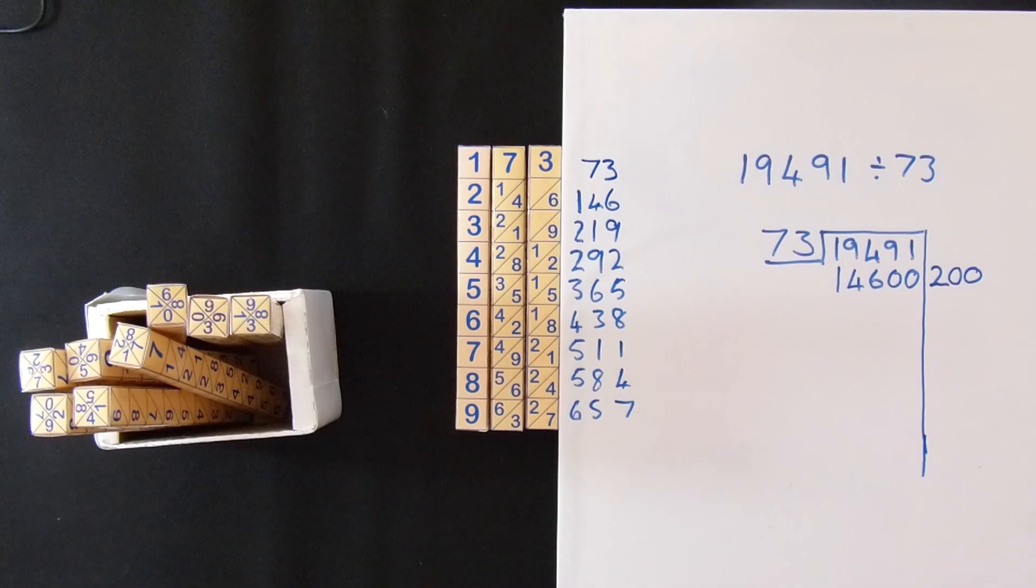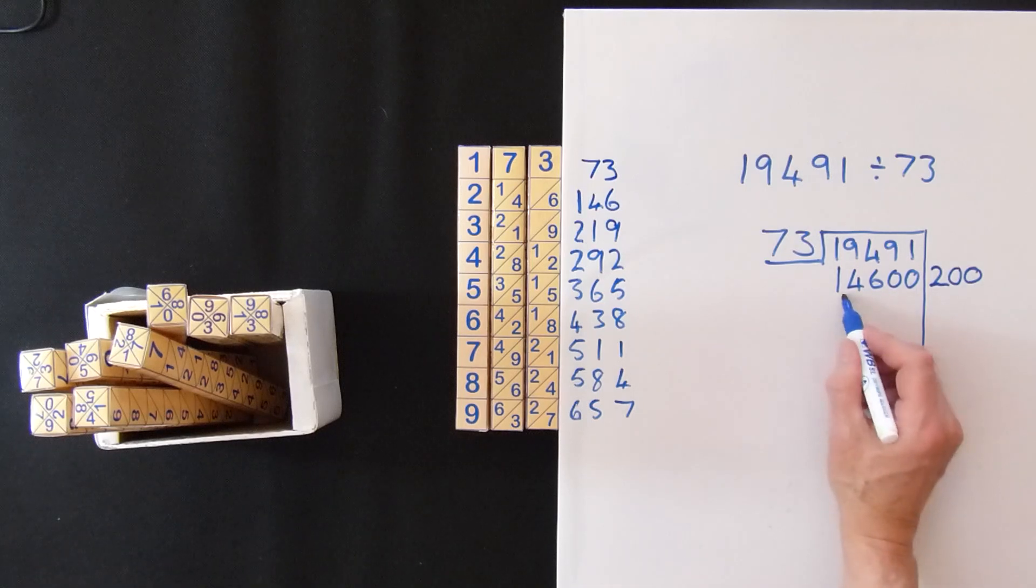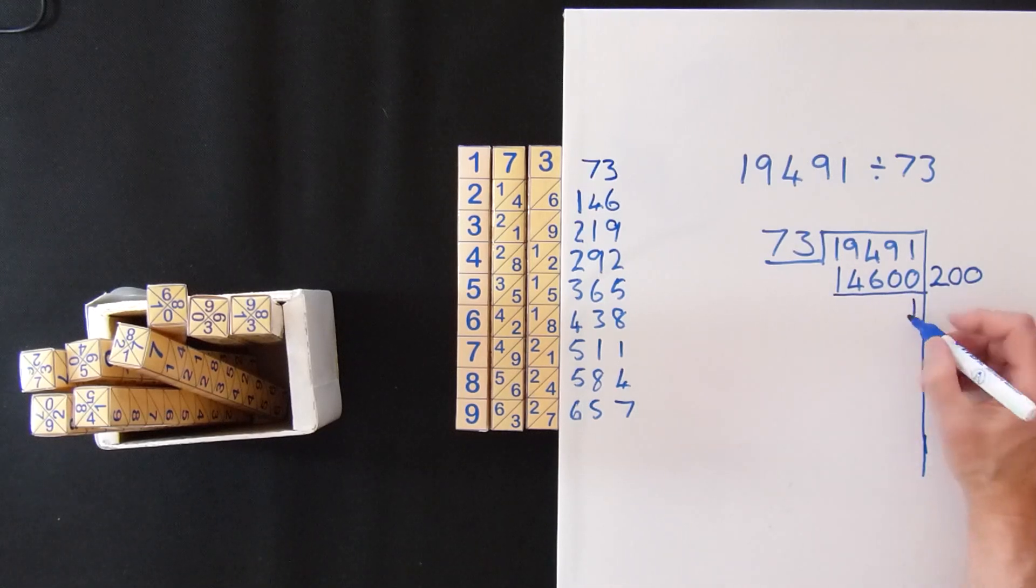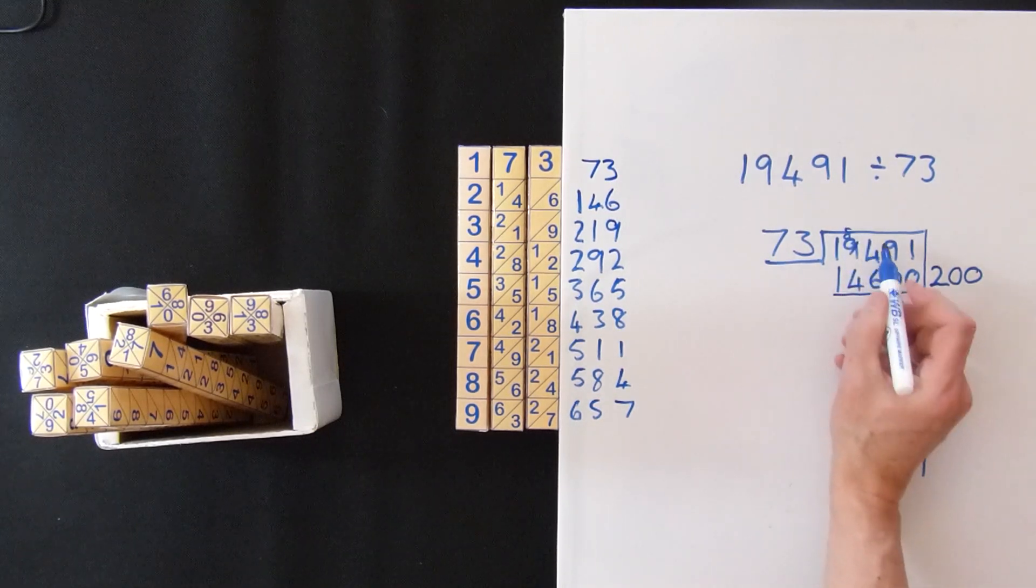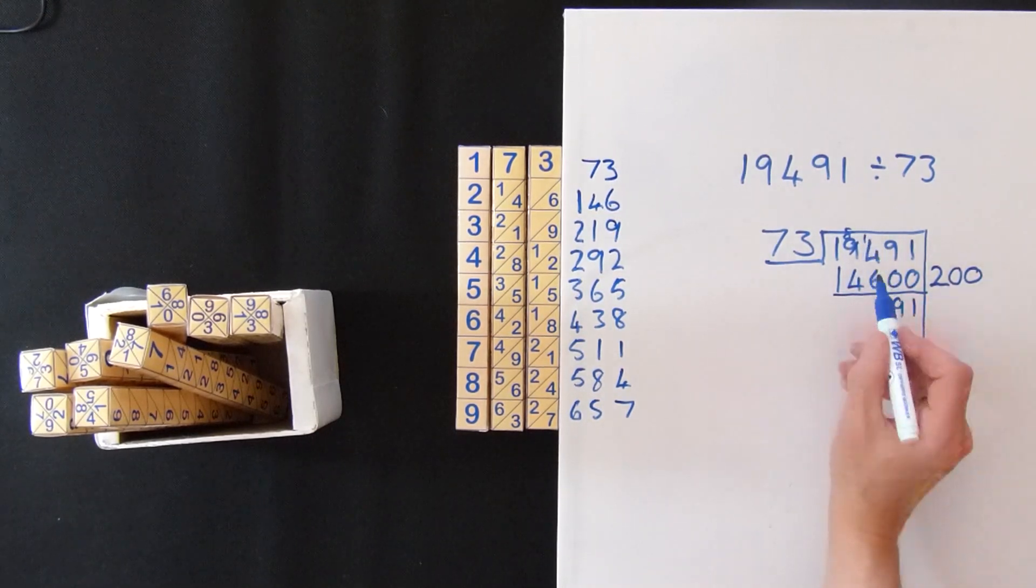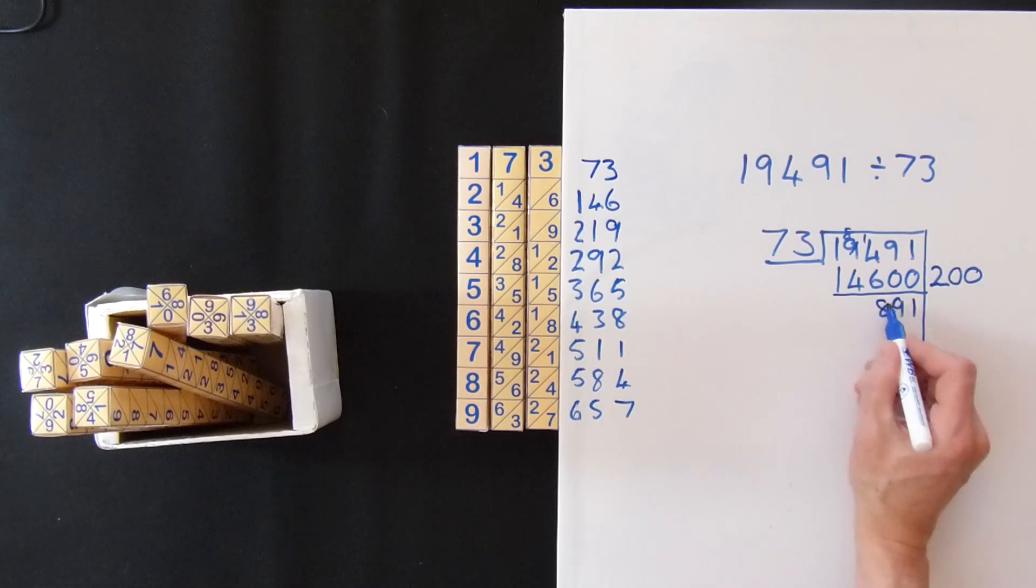So we now know we've got 273s in there. We've got to see how much more we've got. So we take away and we've got 19. Got to break that one down to an 8. And leaving 14 giving you 8. 4 from the 8 gives you 4.